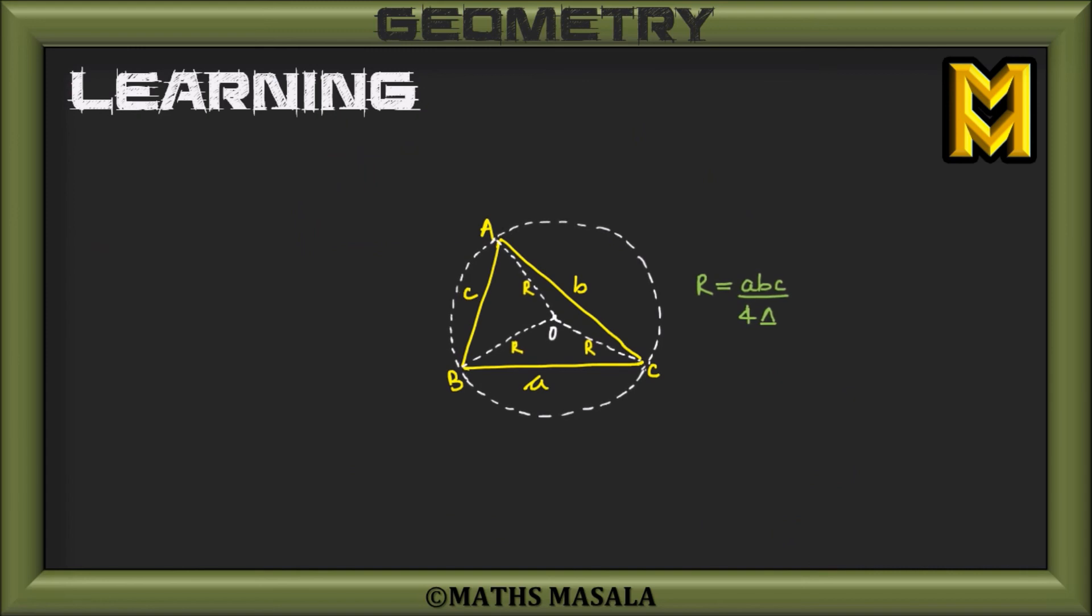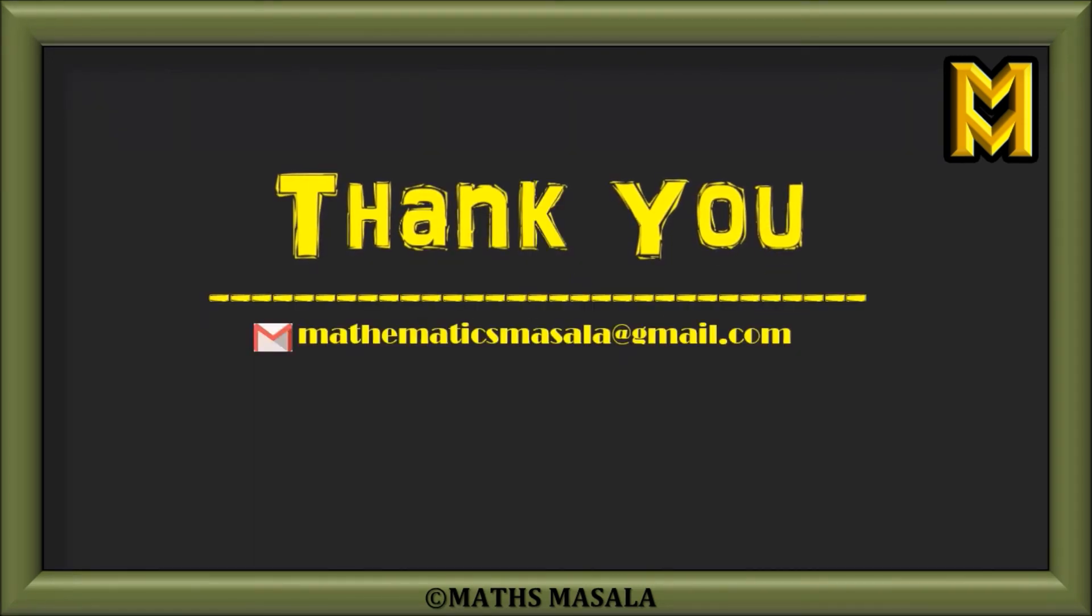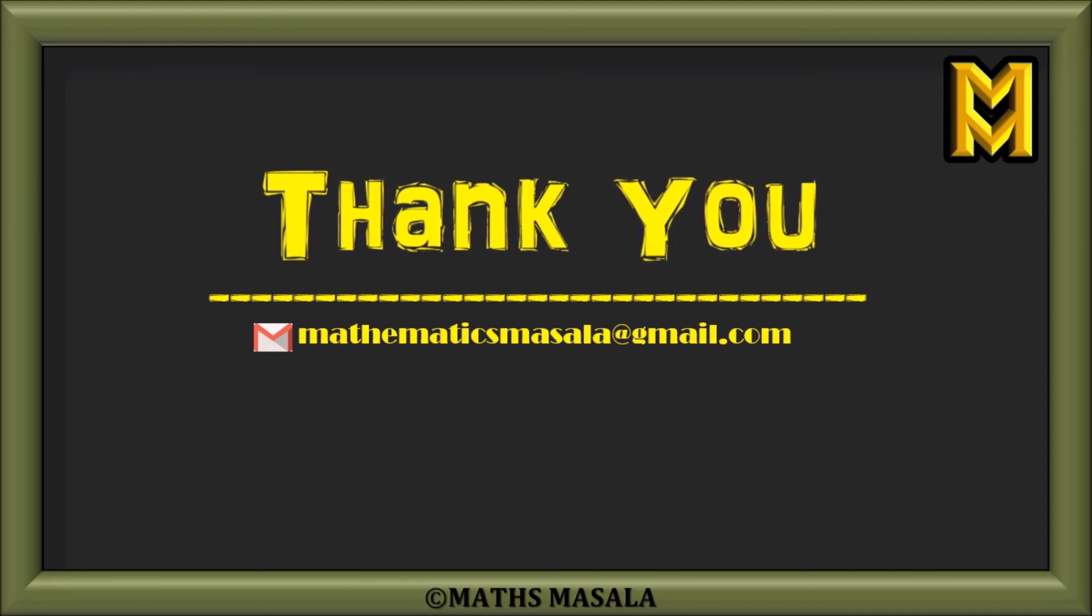The learning from this question would be that in a triangle ABC with sides a, b, and c and circumradius R, the circumradius R is given as the product of sides divided by four times the area. Thank you for watching this video. For more such content, you can stay connected to us through our Facebook page and YouTube channel, Maths Masala.